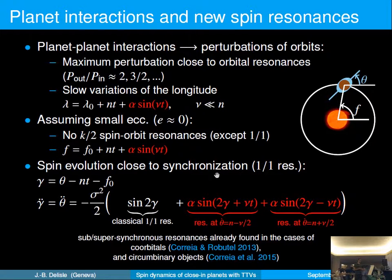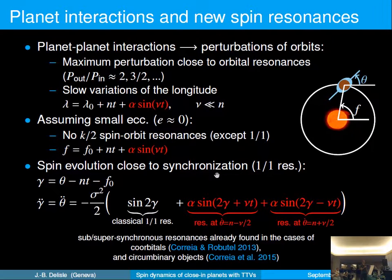So there is a sub-synchronous resonance and a super-synchronous resonance. These asynchronous resonances were already found in the case of co-orbitals and circumbinary objects by Correia and co-authors. Here we have another example of these resonances for perturbations coming from a mean-motion resonance with another planet. The mechanism is very general: as long as you have a perturbation of this kind in the mean longitude of the planet, you will find new spin-orbit resonances of this kind.